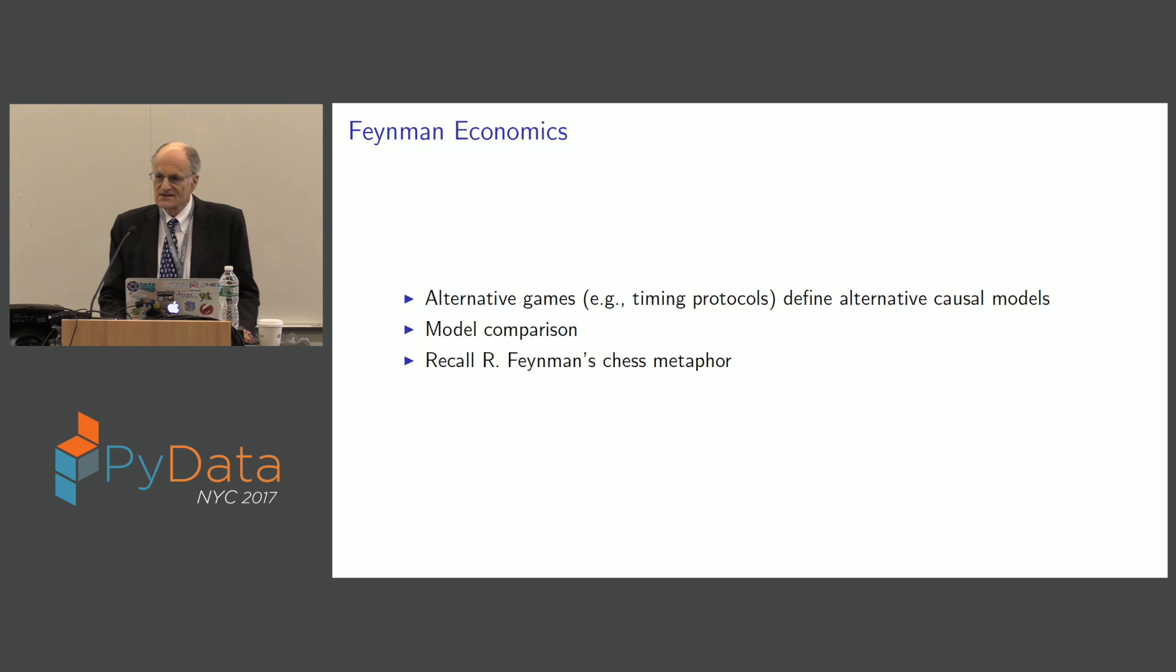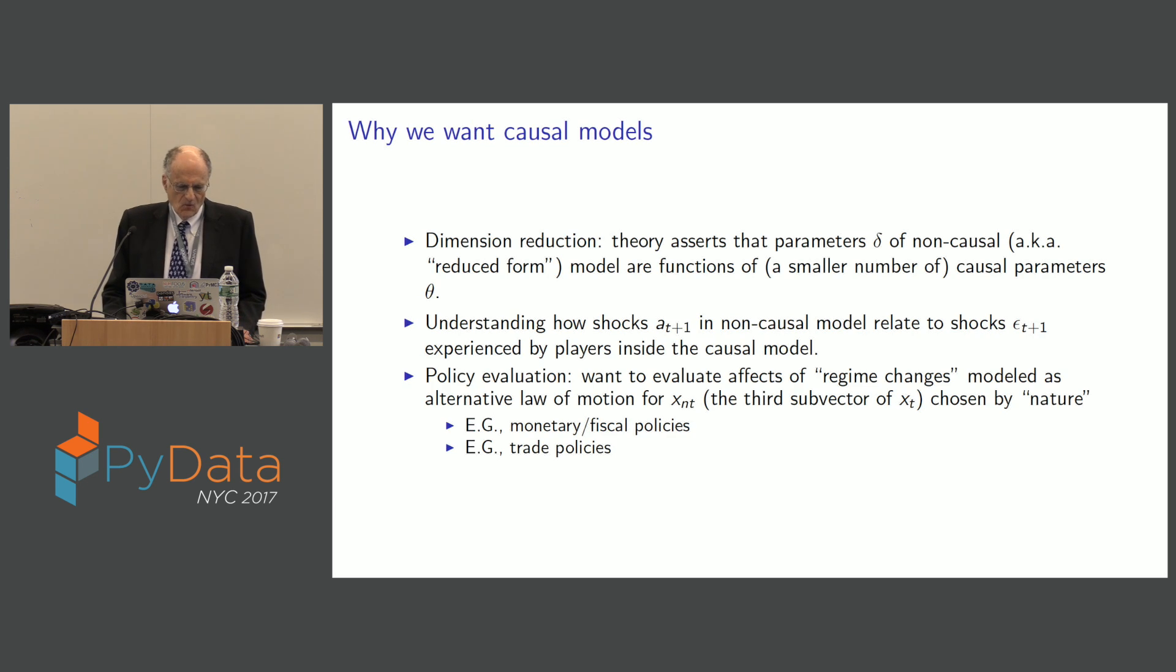That's what the Federal Trade Commission or antitrust is trying to do. Is there really collusion in industry? There's first class economists trying to do that. How can you tell whether there's really collusion in industry? It's hard to do. So why do we want causal models? And now this could be a talk in anything. So you recognize this: dimension reduction. The theory asserts that the parameters delta of the non-causal model are actually functions of the parameters of the causal model theta. And theta might be a lot smaller dimension than delta. Anytime you can reduce the dimension of parameters, do it.